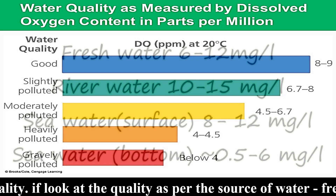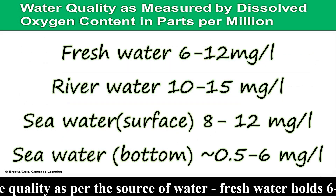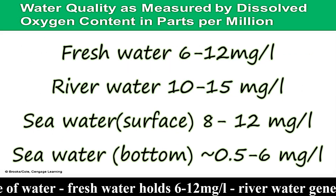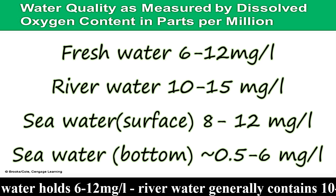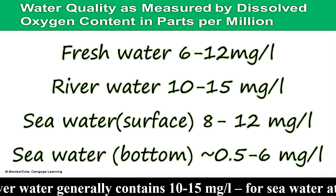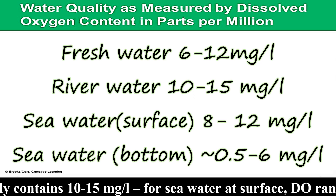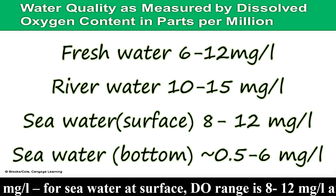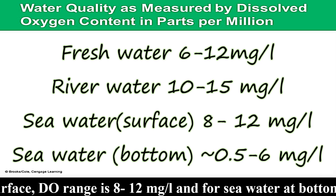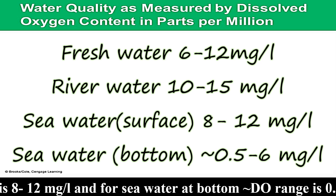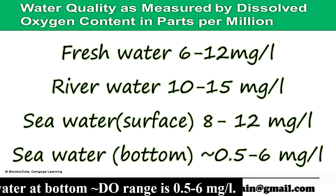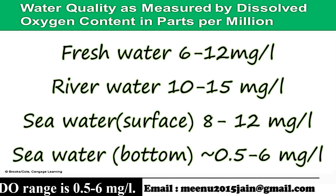Looking at water quality per the source of water: fresh water holds 6 to 12 ppm; river water generally contains 10 to 15 ppm or mg per litre; for sea water at the surface, dissolved oxygen ranges from 8 to 12 ppm; and for sea water at the bottom, dissolved oxygen ranges from 0.5 to 6 ppm.